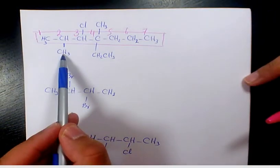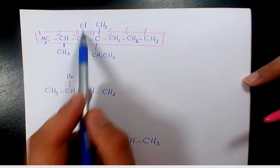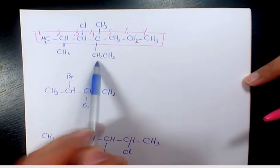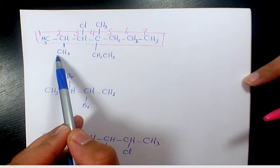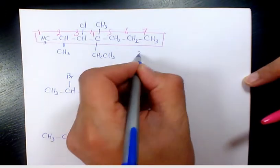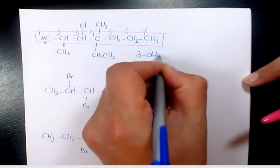So here we have methyl group, two methyl, three chloro, four methyl and four ethyl. So this starts with M, C and E, so C comes first. So it's going to be three chloro.